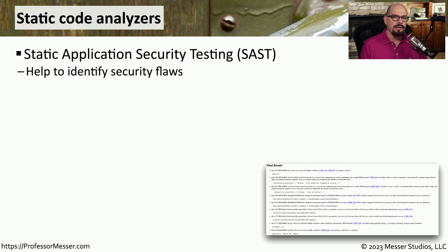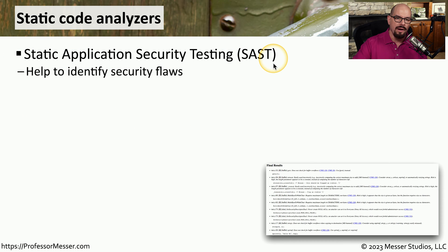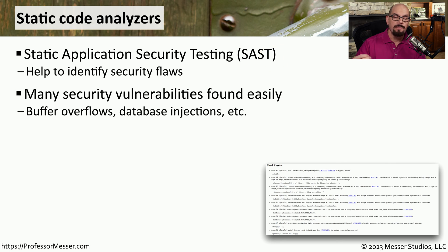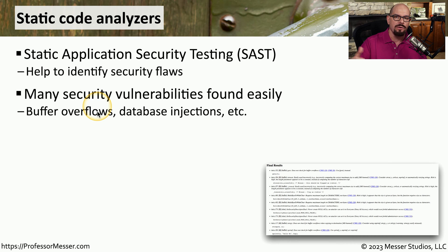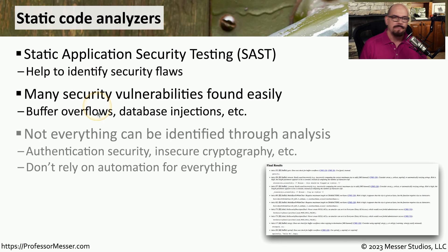One way that application developers test the security of their applications is to run it through a process of static code analysis. You may see this referred to as static application security testing, or SAST. The developers will put their code into the static analyzer, and that analyzer will look through the code to try to find vulnerabilities, such as buffer overflows, database injections, and other types of vulnerabilities.